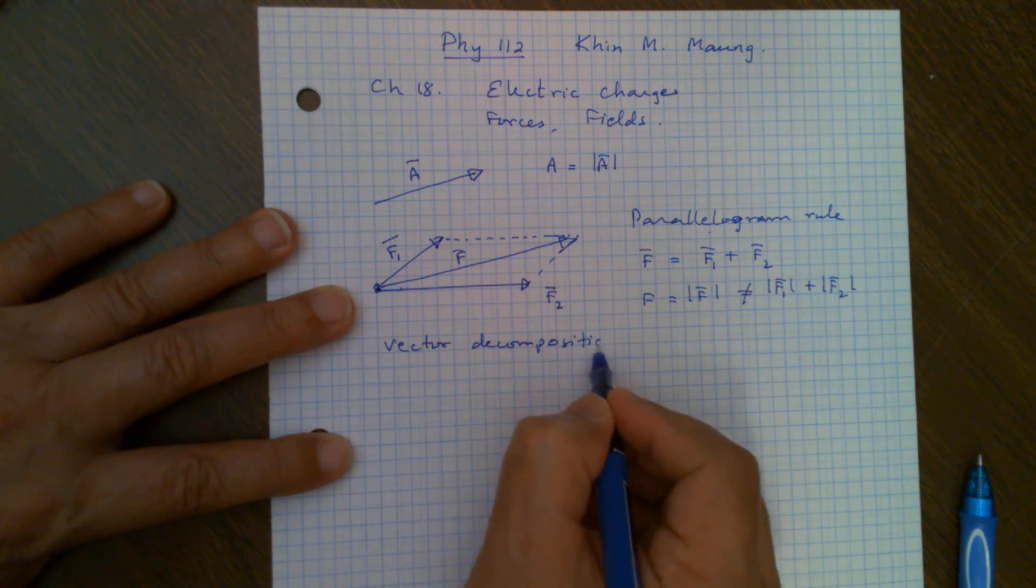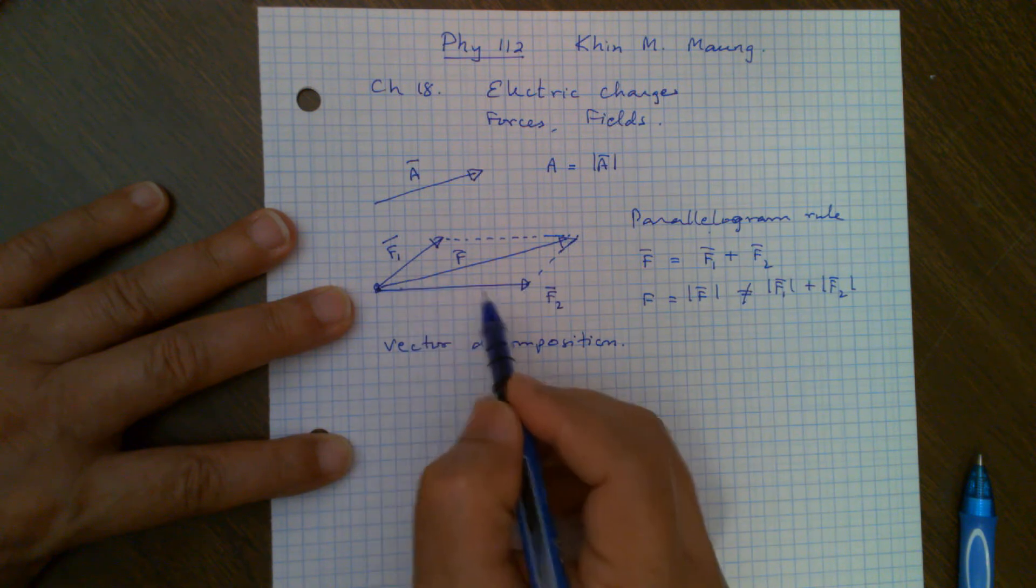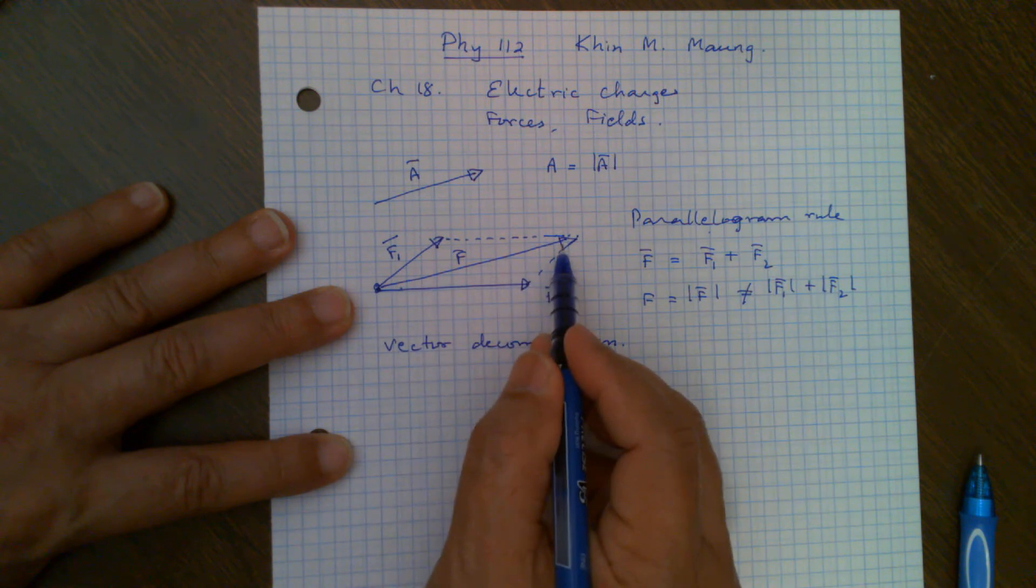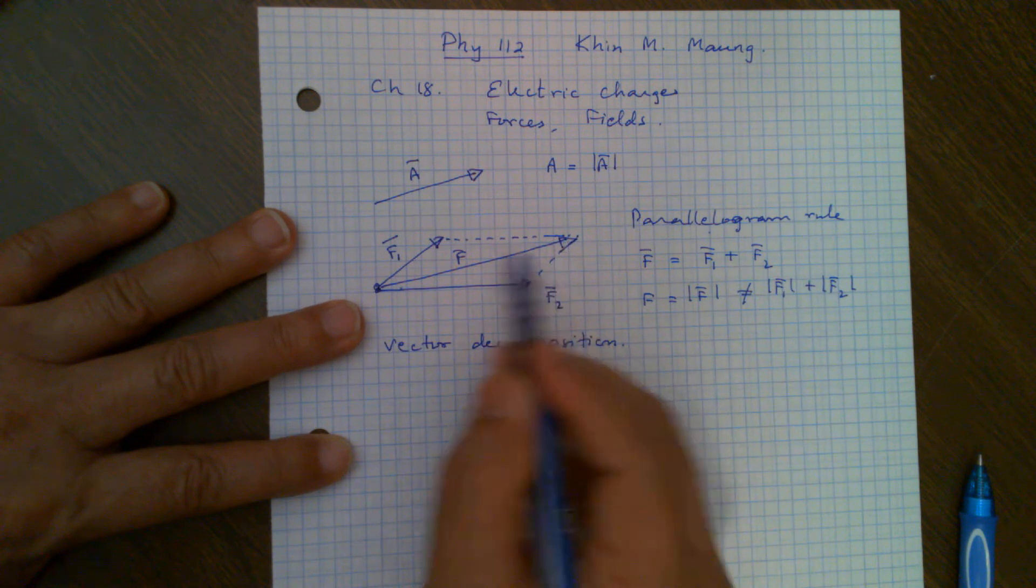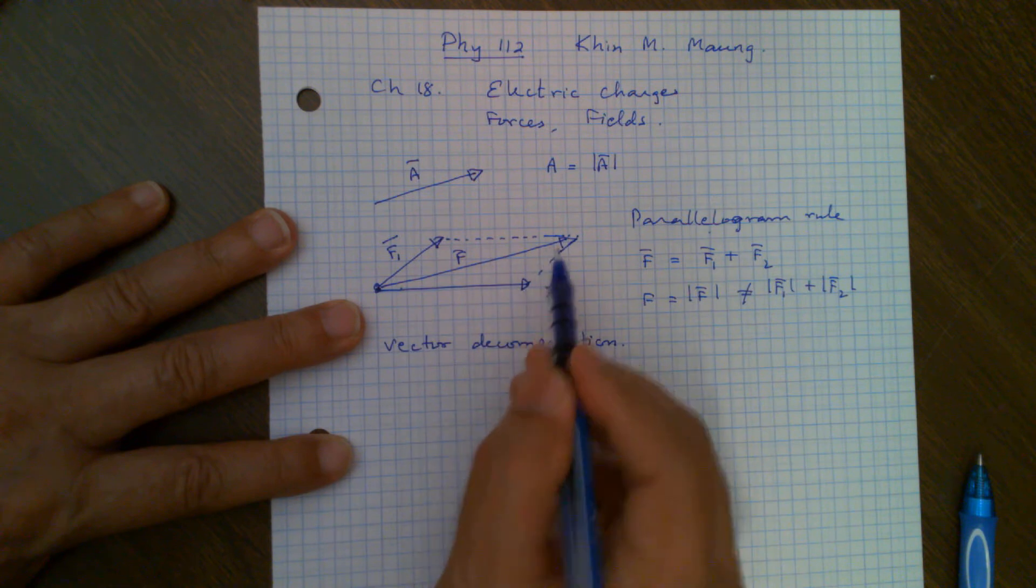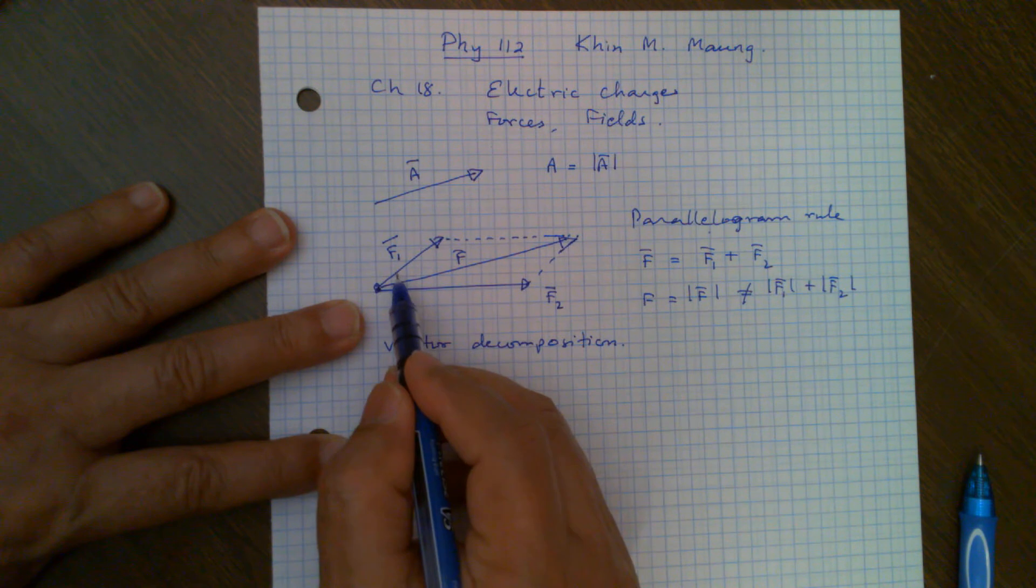So what is vector decomposition? That is, when you have a vector, then you decompose it into two different vectors. So the original vector is gone. For example, look at this. This F1 and F2, I told you, when we add them up, we will get this resultant vector. That means this resultant vector is the same equivalent to the result of F1 and F2. That means I can decompose this vector into F1 and F2.